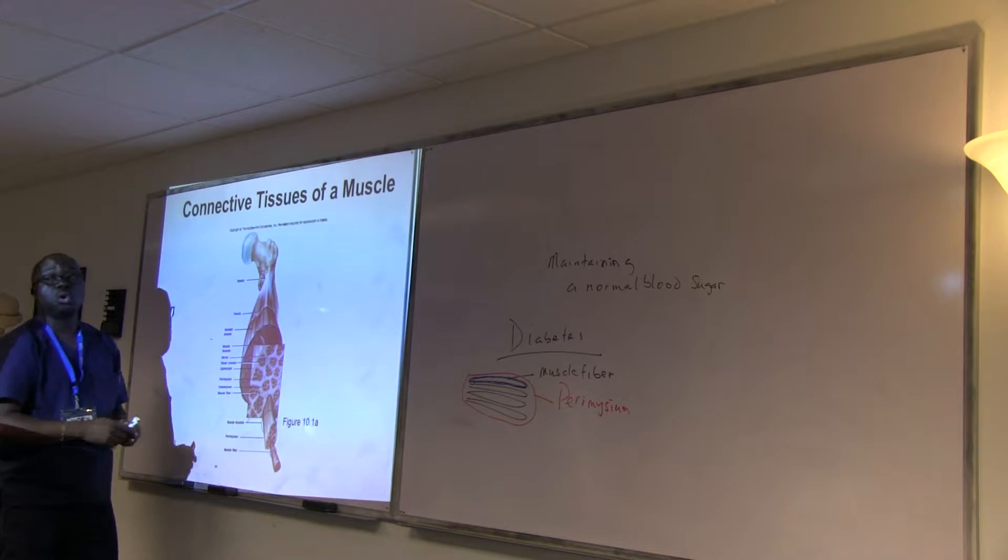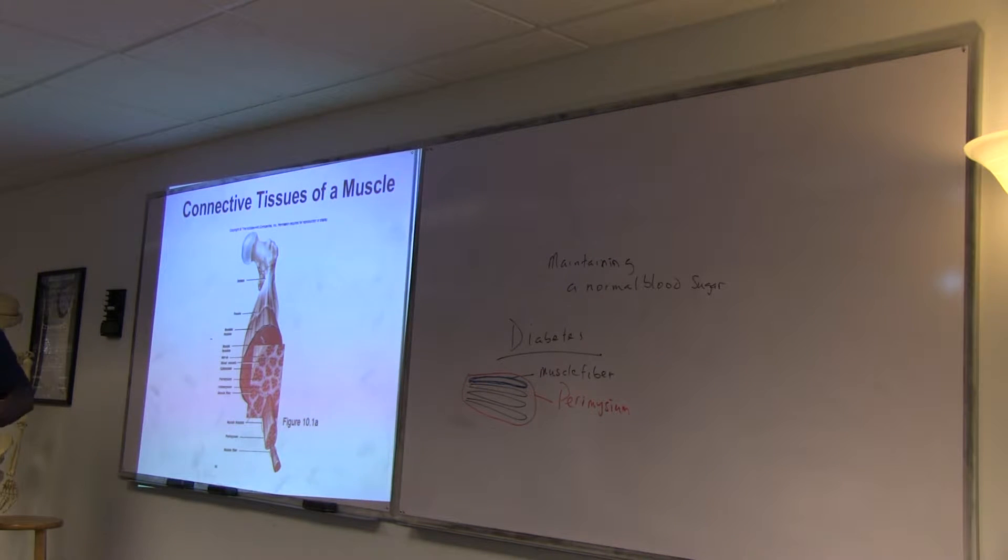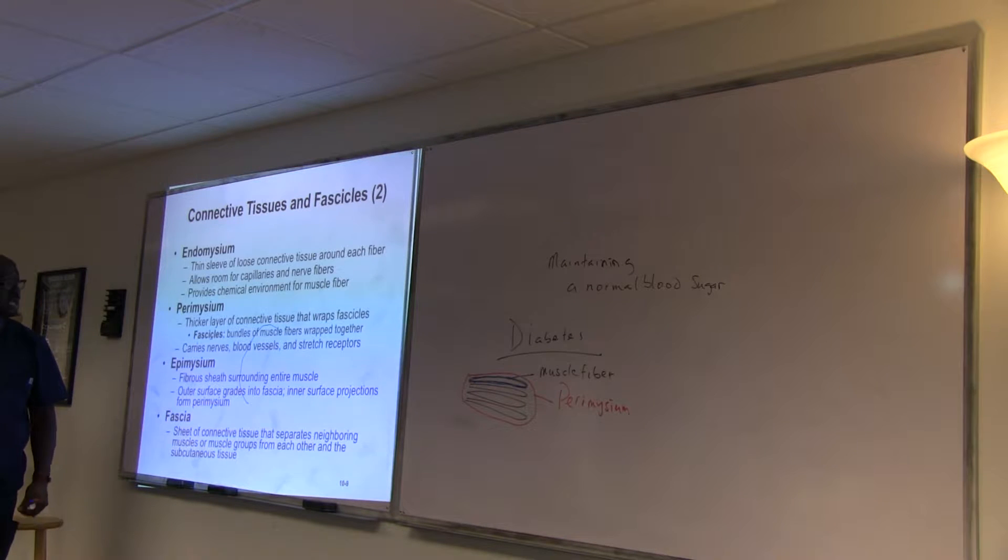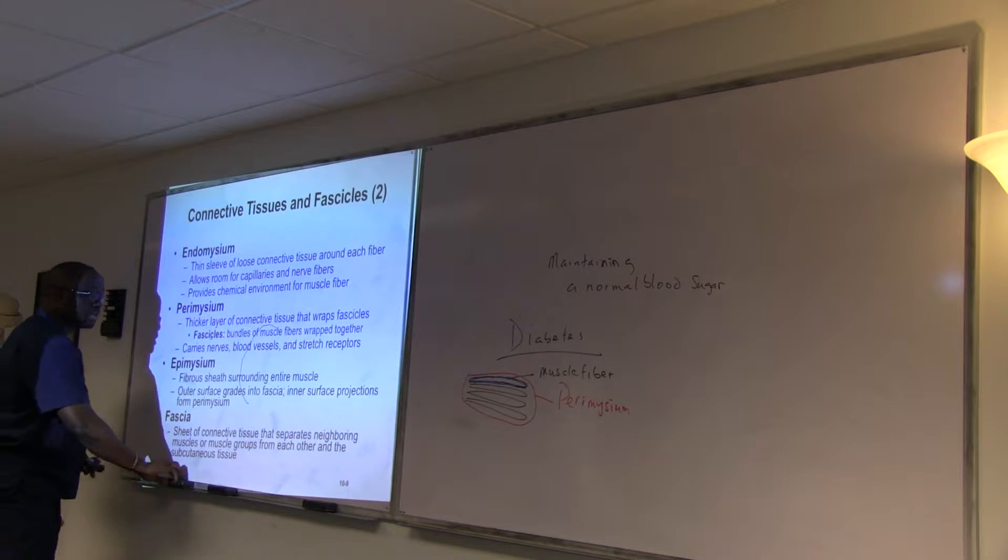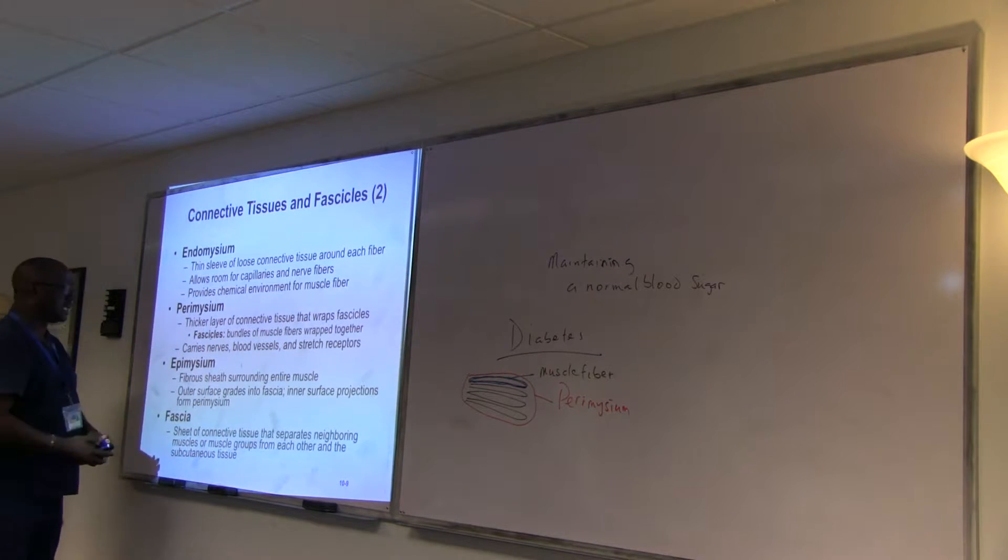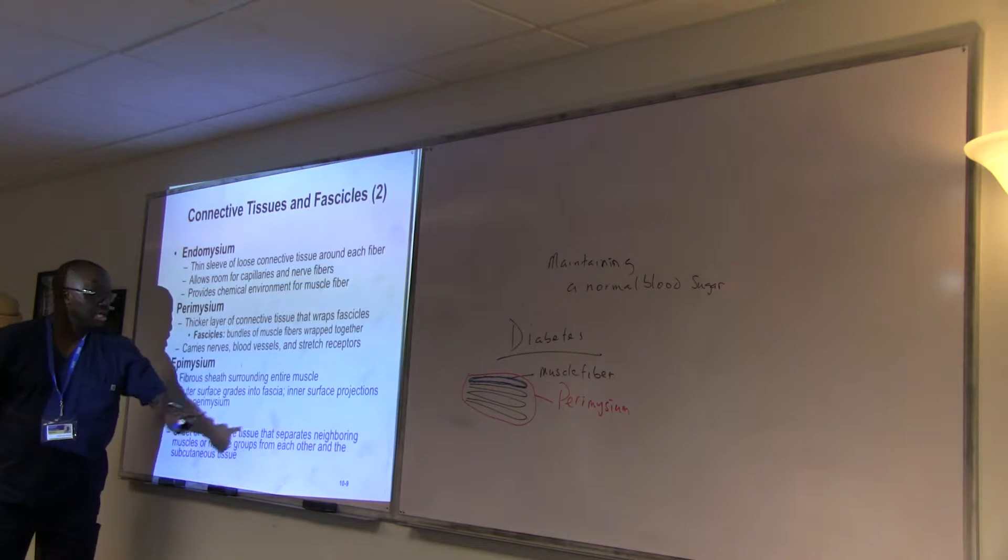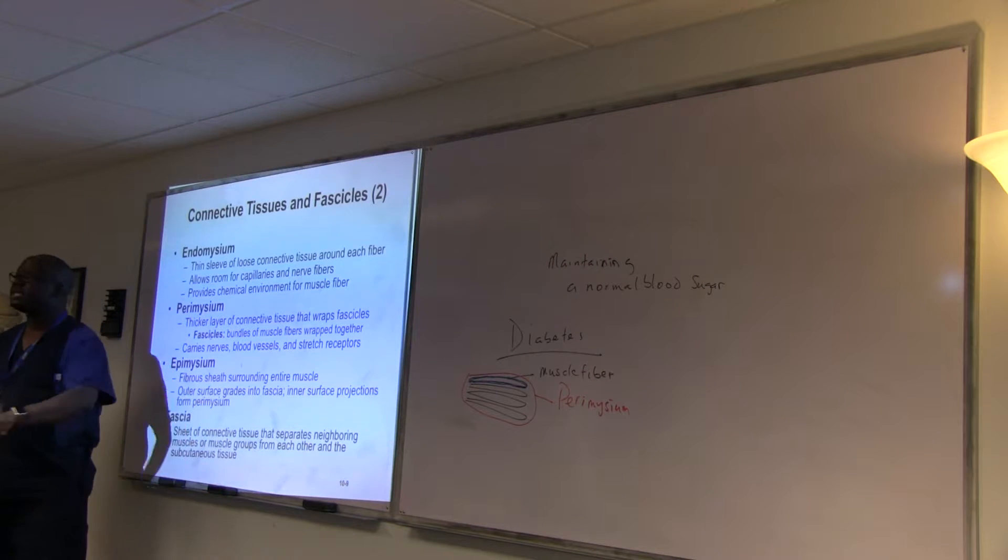Everything that surrounds the whole muscle, there is epimysium. Alright, epimysium. And eventually the epimysium becomes what? It folds into what? Fascia.